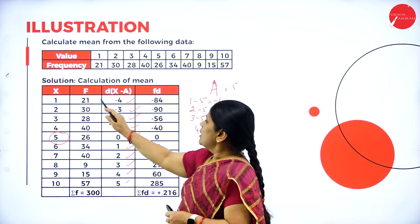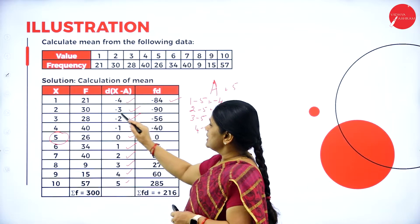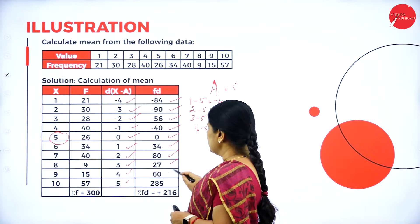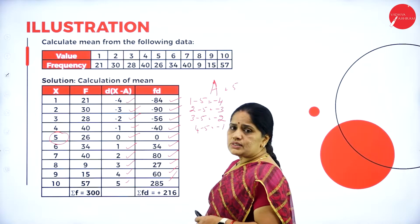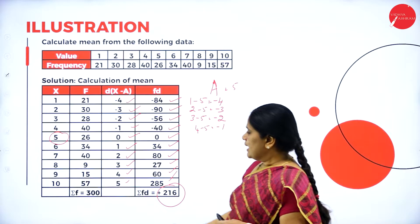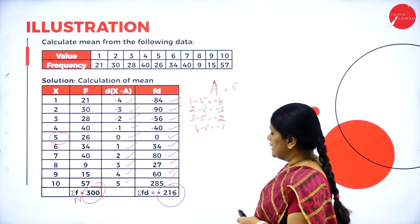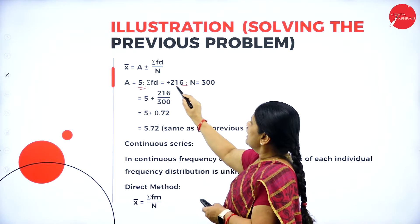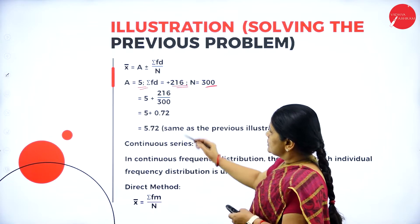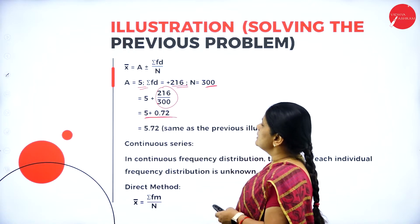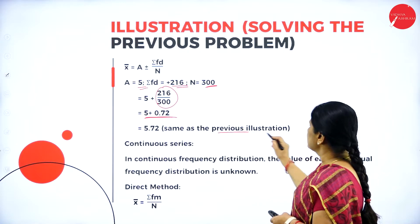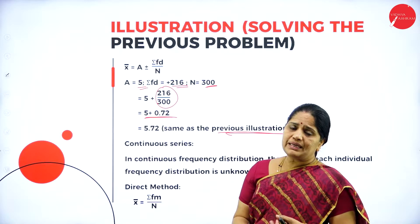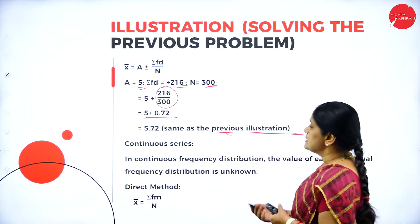Next step: f into d. 21×(−4) = −84; 30×(−3) = −90; 28×(−2) = −56; and so on, getting values −40, 0, 34, 80. Adding all these values gives sigma fd = +216, and n = 300. Substituting: mean = a + sigma fd/n = 5 + 216/300 = 5 + 0.72 = 5.72. The answer is the same whether using the direct method or the assumed mean method.